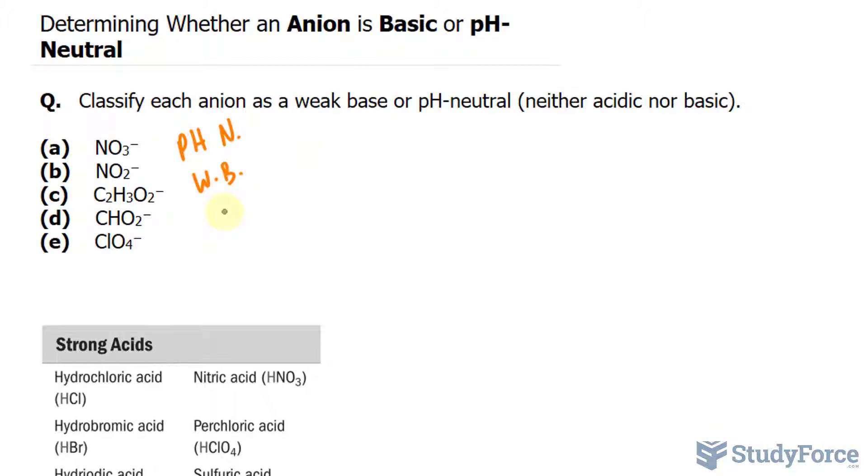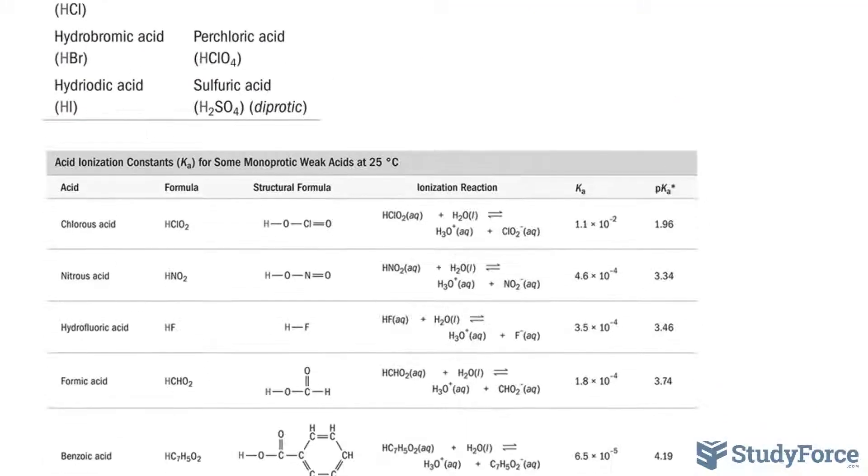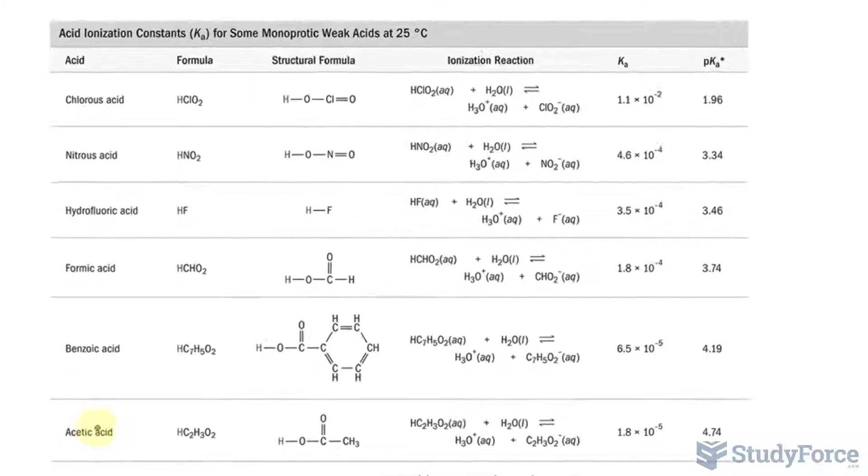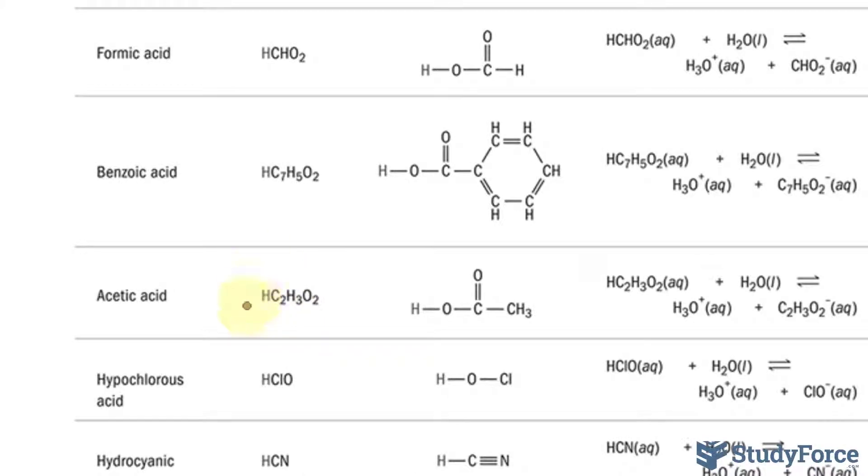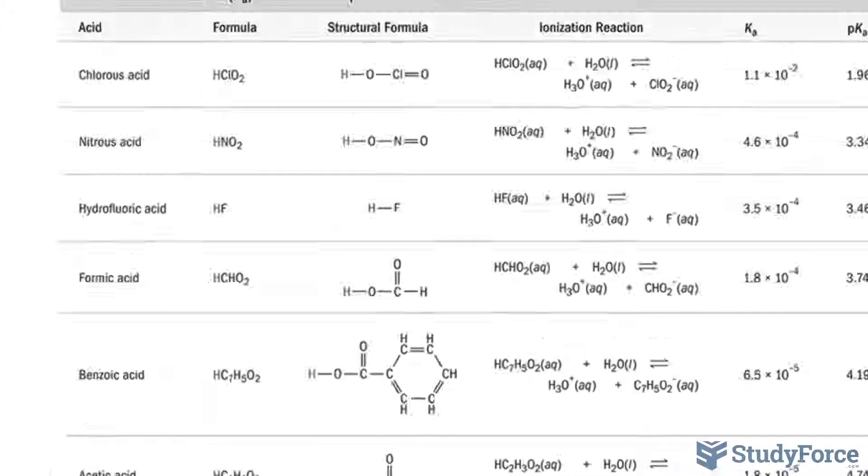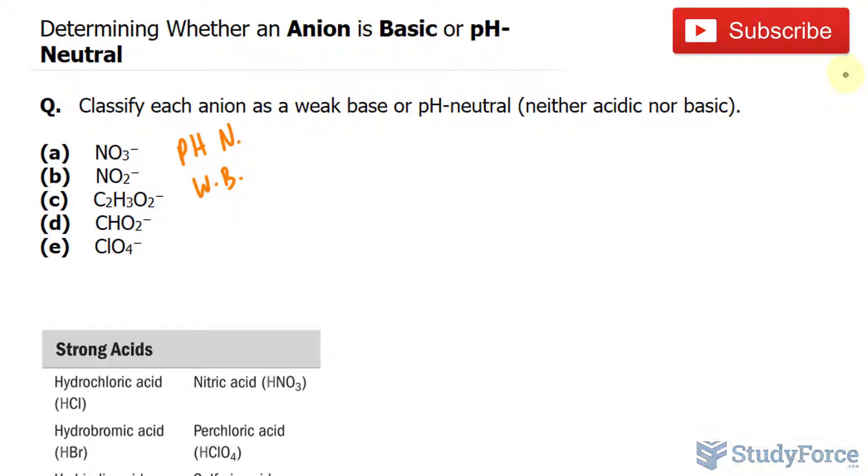Let's do the same sort of analysis for C. We have C2H3O2-, and I notice that in this table, here we have acetic acid, and its chemical formula is HC2H3O2. Notice that if it loses a proton, it becomes the anion that you see here. Since it's a weak acid, then this anion is a conjugate base, therefore, we call it a weak base.